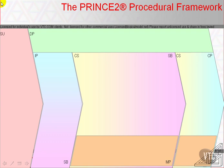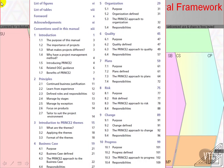The procedural elements of PRINCE2 start in the official manual with an introduction at chapter 11. So let's quickly whiz over those preceding 11 chapters to see what they cover.